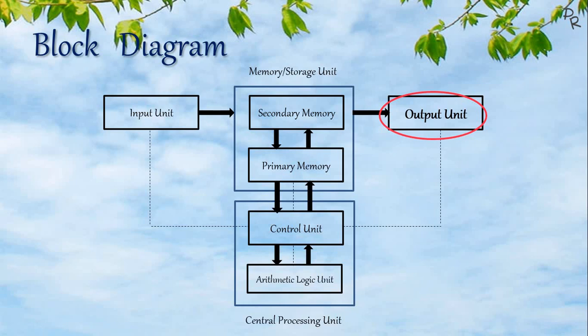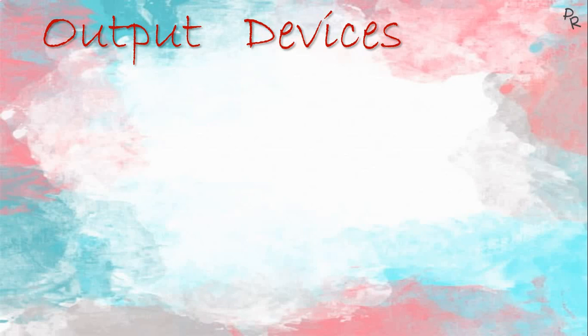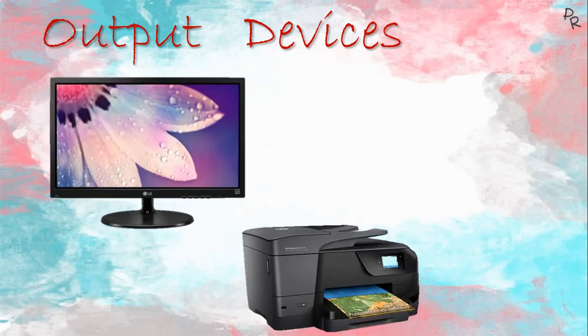The output unit is the opposite of the input unit — it is an interface between the computer system and the outside world, linking the computer to the outside world by displaying the result to the user. The output given by the computer will be in computer-understandable form, so the output unit converts it into human-understandable form. Here are a few output devices: the monitor, printer, and the speakers.